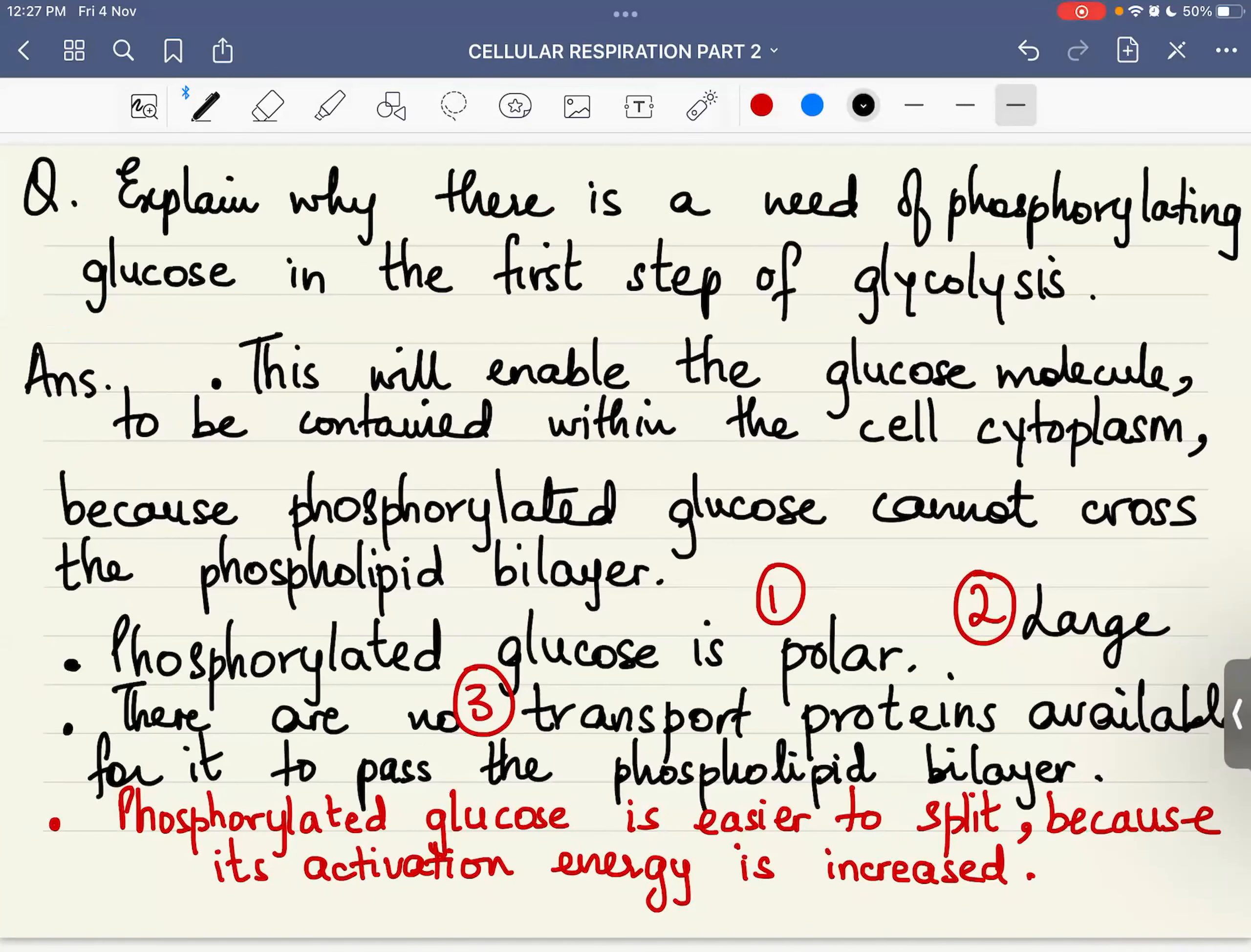Same thing which I said - I would strongly advise you to go through this. It's an important point. Glucose is polar and large so there are no transfer proteins available. But phosphorylated glucose is possible to be contained within the cell because the phosphorylated glucose cannot cross the membrane. And then it is easier to split because its activation energy is increased.